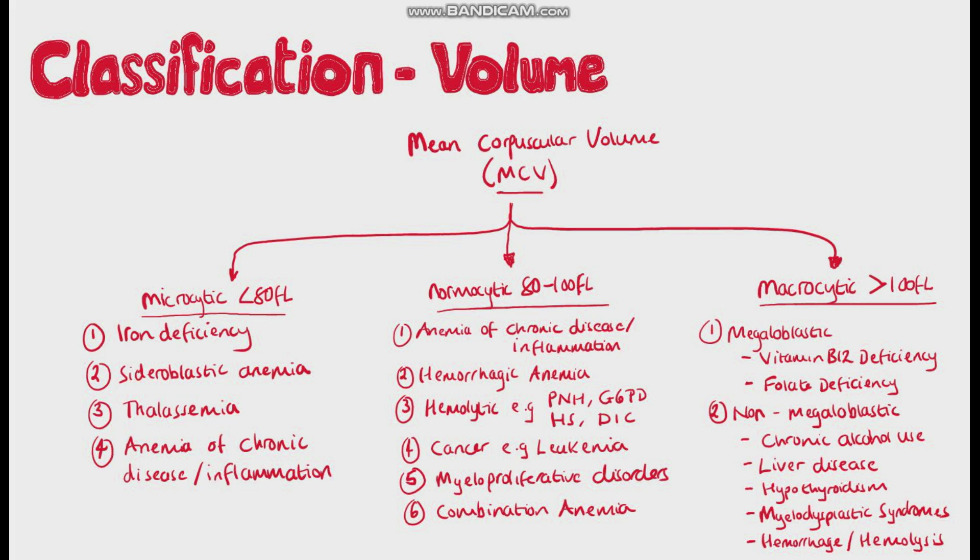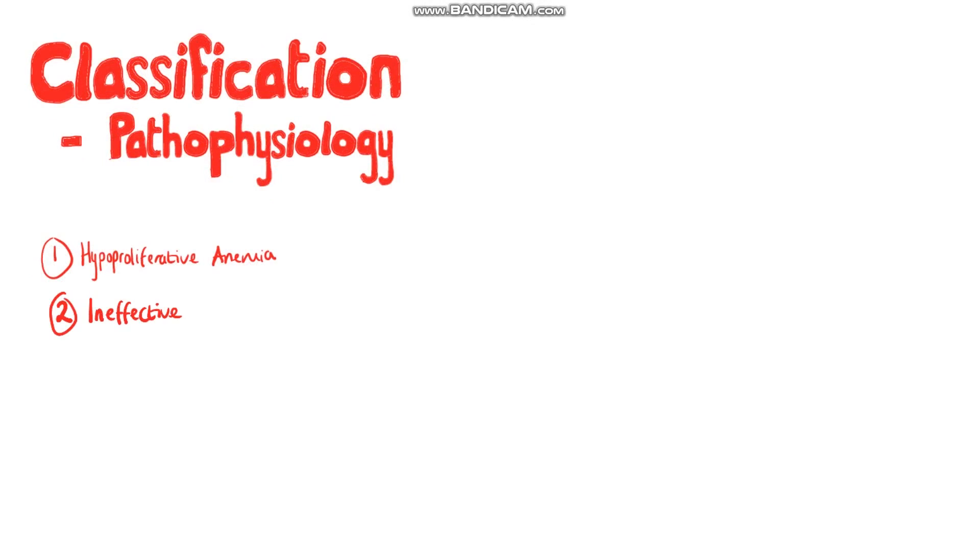Okay, now for the pathophysiology classification. In this classification, different causes of anemia are divided based on how they cause anemia. We already said that these were hypoproliferative anemia, ineffective erythropoiesis, and hemolytic or hemorrhagic anemia.